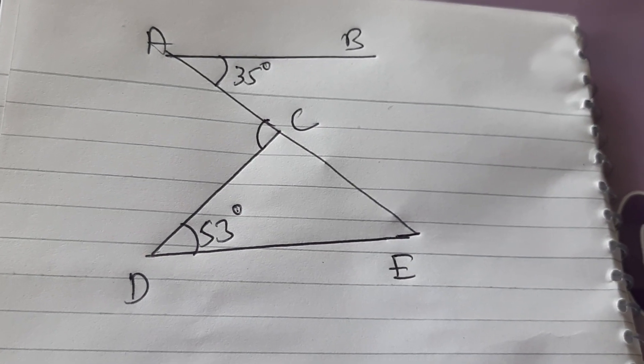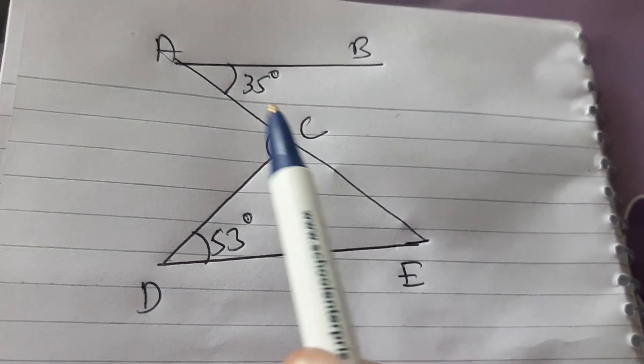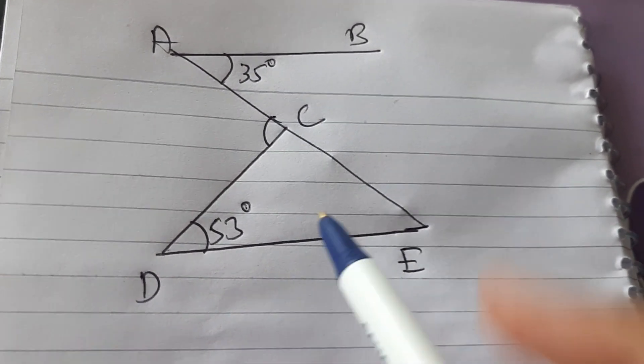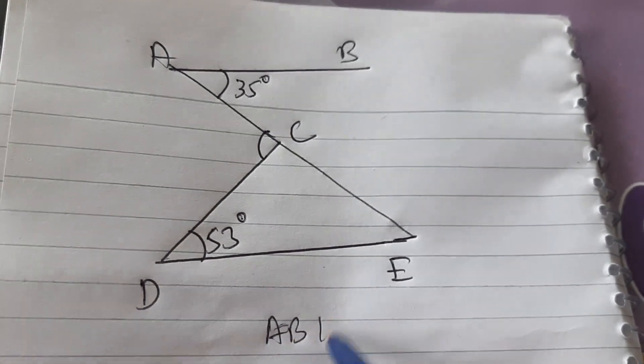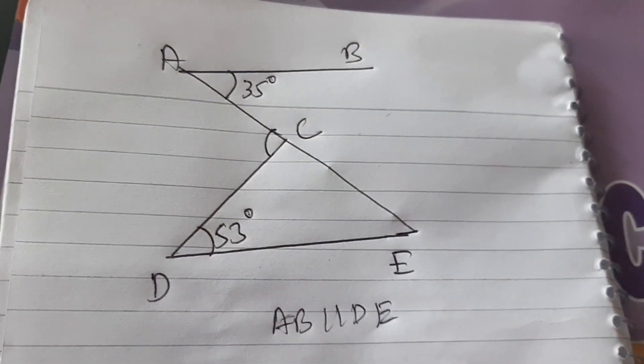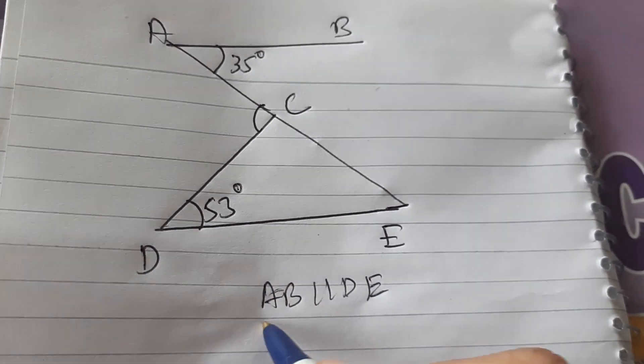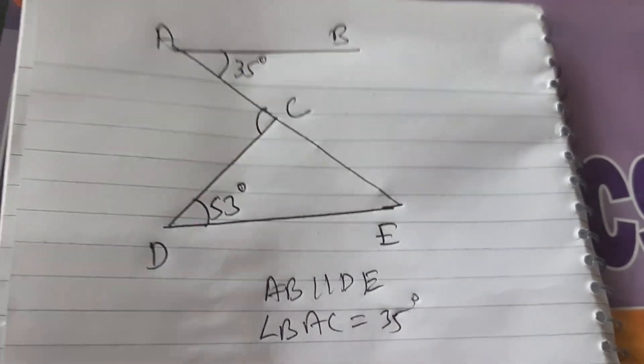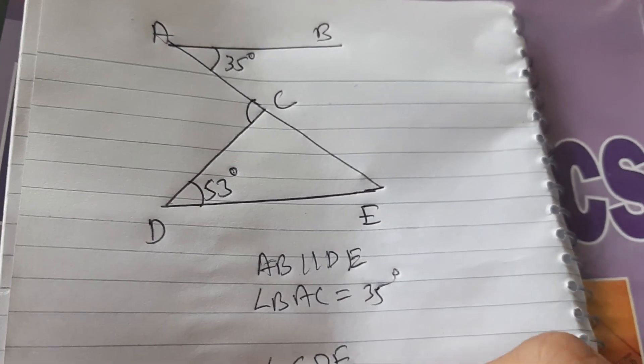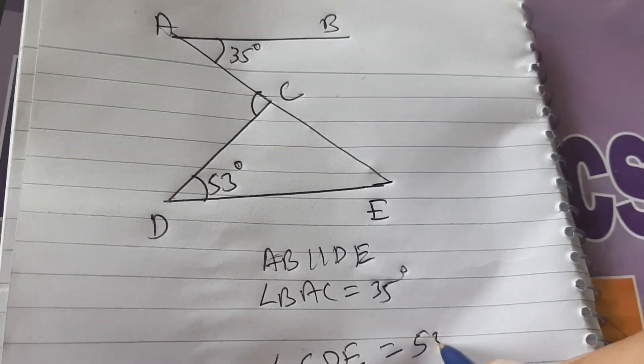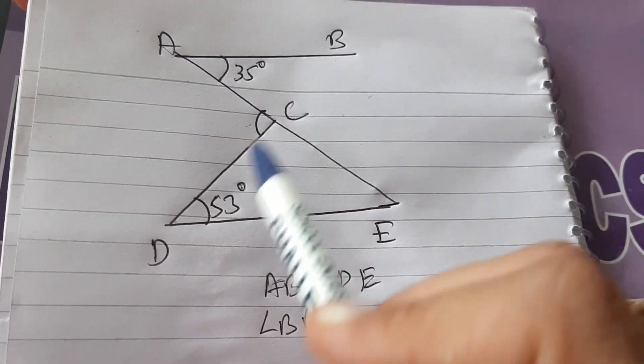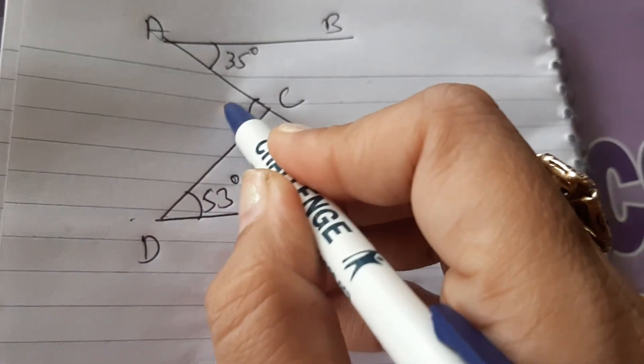Dear students, let us discuss this question from the chapter parallel lines. In this question, it is given that AB is parallel to DE and angle BAC is equal to 35 degrees. Angle CDE is equal to 53 degrees and we have to find angle ACD.